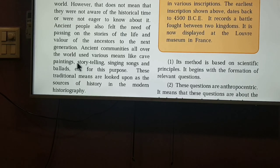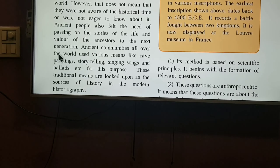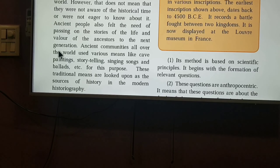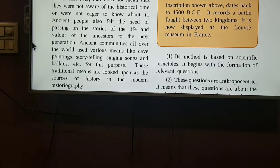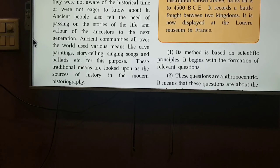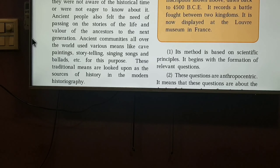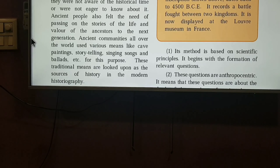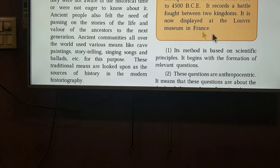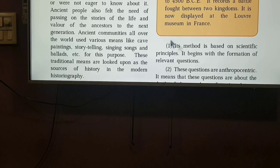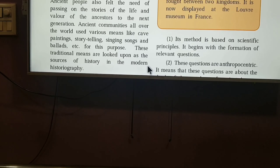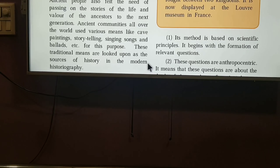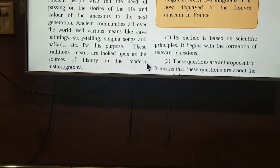Ancient communities all over the world used various means like cave paintings, storytelling, singing songs and ballads, etc. for this purpose. In those times when history was not written down, we come to know about certain incidents through paintings — like at Ajanta and Ellora — or through storytelling passed down from great-grandfather to grandfather to father to us. These traditional means are looked upon as sources of history in modern historiography.